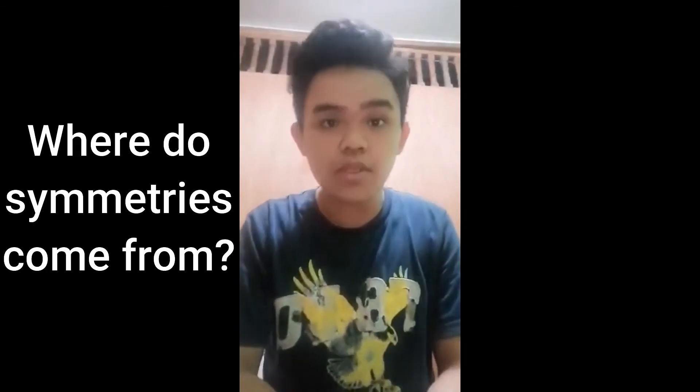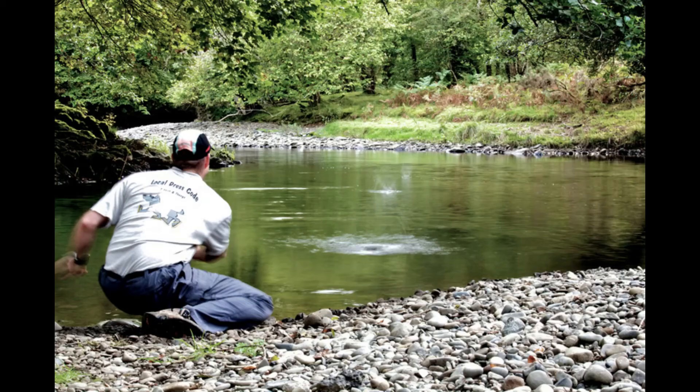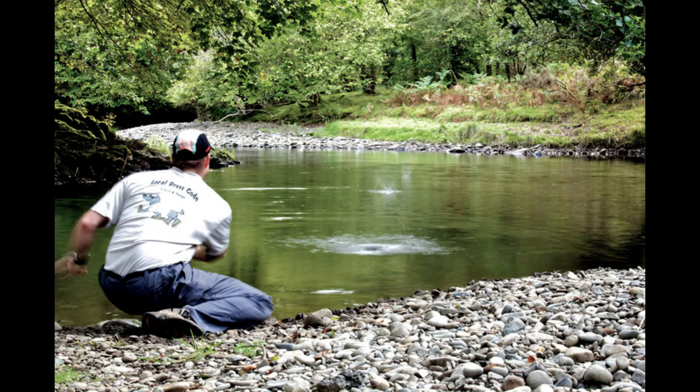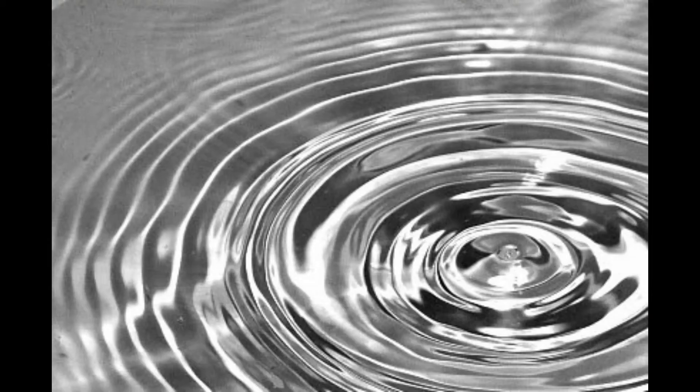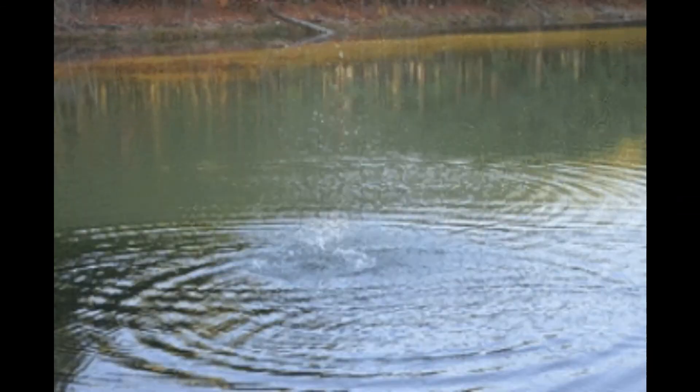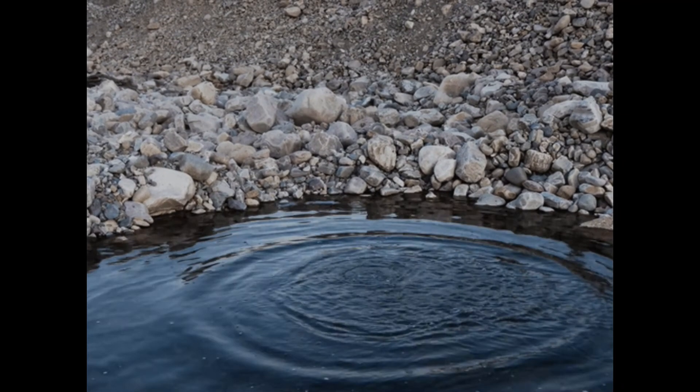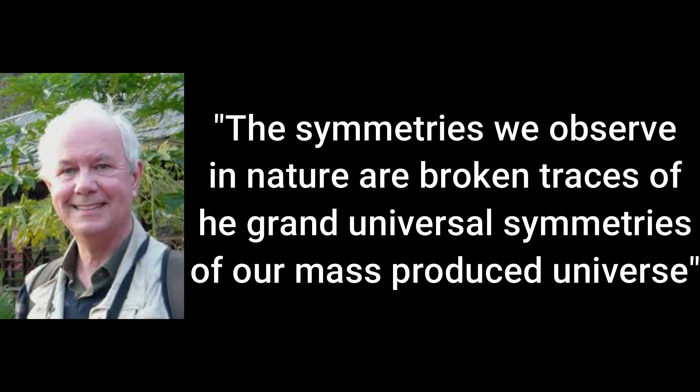But Ryan, do you ever wonder where those symmetries come from? This was explained on page 77 of the book: by tossing a pebble on a still pond, you will see patterns — ripples and circular waves moving away from where the pebble landed. We can easily see that the cause of the ripples was the pebble. Stewart claims that the symmetries we observe in nature are broken traces of the grand universal symmetries of our mass-produced universe.